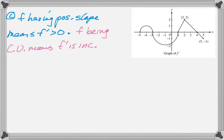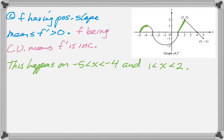So now we're just going to look at the graph and find places where the graph is positive and where it's increasing. You can see from negative 5 to negative 4, and also from 1 to 2. So this happens on the interval negative 5 to negative 4, and on the interval from 1 to 2.